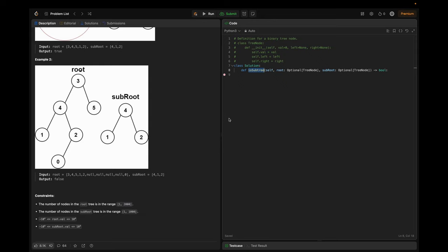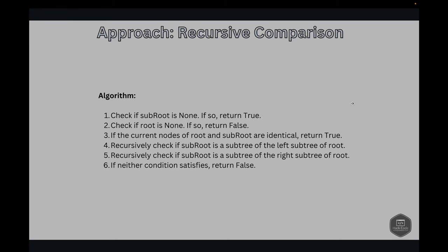Let's look into the algorithm. First, we check if sub root is none — if so, return true. Considering t as sub root and s as the main tree root: if t is none, the sub tree t is empty, and an empty tree can be considered a subtree of any tree, so we return true. If root is none, we return false, because the subtree cannot be found further down this branch.